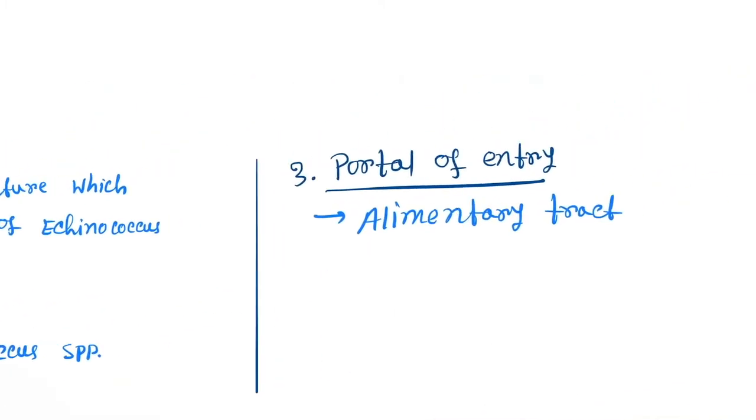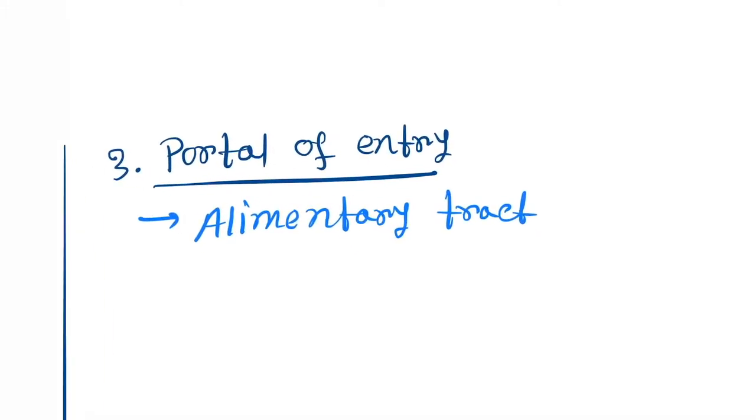Infective agent is the eggs of Echinococcus species. Next is portal of entry, which is the alimentary tract. Now discuss the pathogenesis, how it occurs and how it enters through the body.